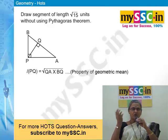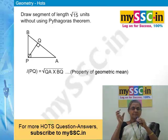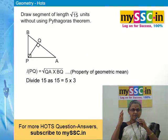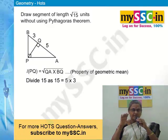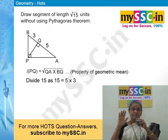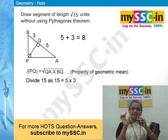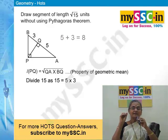To draw a segment of length √15, we first split 15 into two factors. We can split it as 5 × 3 = 15, or as 15 × 1 = 15. For convenience, I will take 5 and 3 since their product is 15. Then 5 and 3 will be the two segments of the hypotenuse. Draw an analytical figure — a right-angle triangle ABP, where P is at the right angle — AB is the hypotenuse, and draw a perpendicular from P to AB.